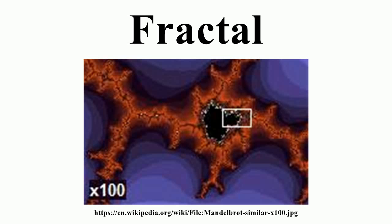Self-similarity, which may be manifested as exact self-similarity — identical at all scales, e.g. the Koch snowflake. Quasi-self-similarity — approximates the same pattern at different scales, may contain small copies of the entire fractal in distorted and degenerate forms, e.g. the Mandelbrot set's satellites are approximations of the entire set, but not exact copies. Statistical self-similarity — repeats a pattern stochastically so numerical or statistical measures are preserved across scales, e.g. randomly generated fractals, the well-known example of the coastline of Britain.